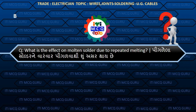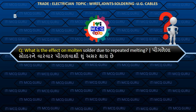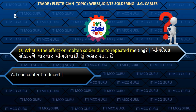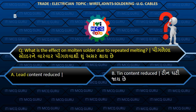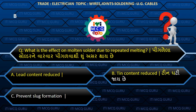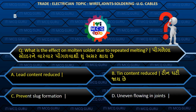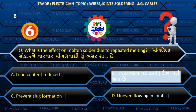What is the effect on molten solder due to repeated melting? (Pigdela solder ne varam var pigadwaathi shun asar thai chhe?) Answer B: Tin content reduced.